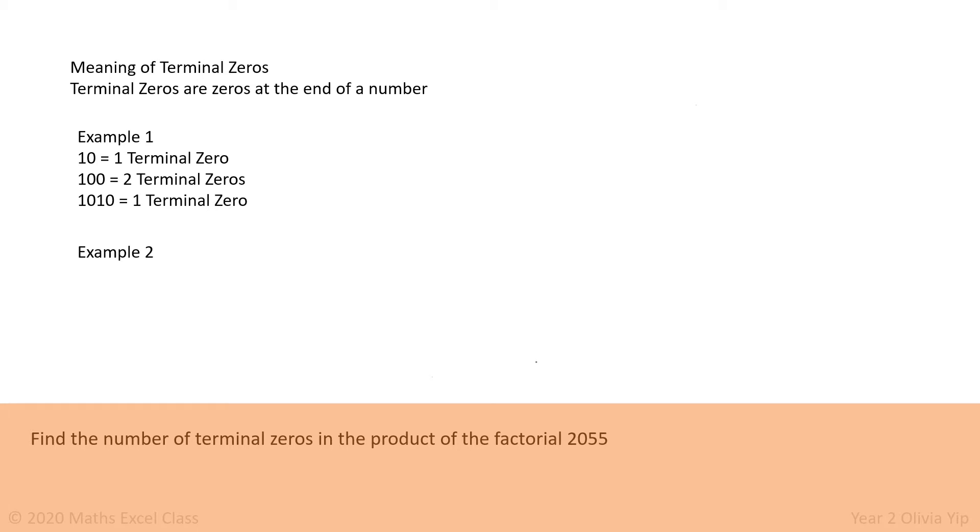Example 2: 10 equals 5 times 2, so it has one terminal zero. 200 equals 5 times 5 times 2 times 2 times 2 and has two terminal zeros because there are two 5s and two 2s.